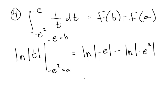All right, but the absolute value of negative e, that's just going to be e. So this is the ln of e minus the ln of e squared.